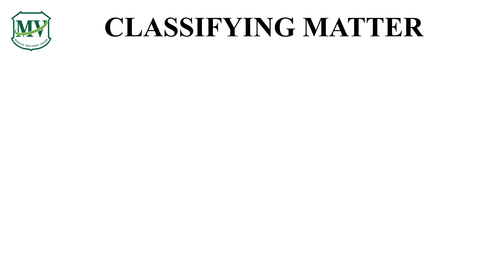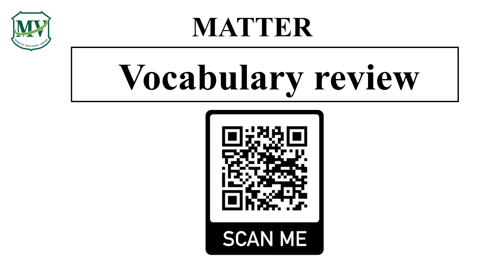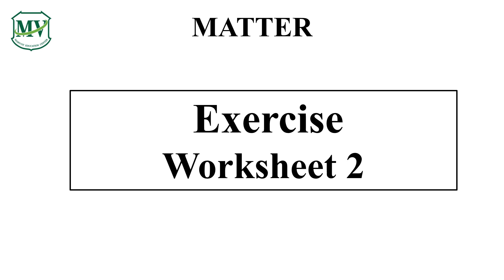The last technique is using a separation funnel. This is useful in separating two immiscible liquids with two different densities. The liquid with higher density settles at the bottom of the funnel, and once you open the tap, the more dense liquid starts flowing down. And now you have separated the two liquids from each other. Scan the QR code to review vocabulary you have learned, and make sure to answer worksheet number two.